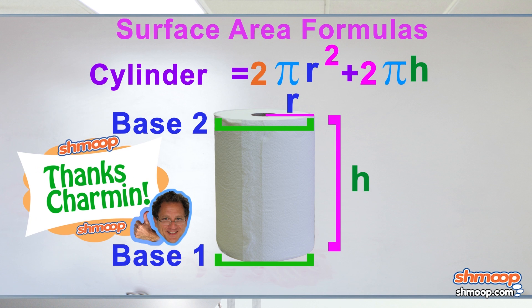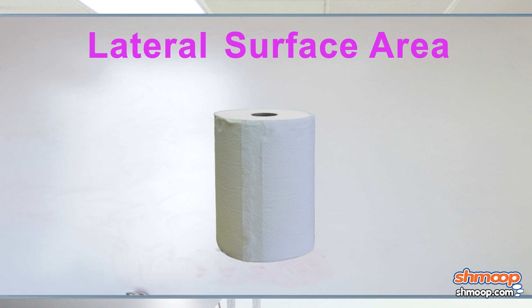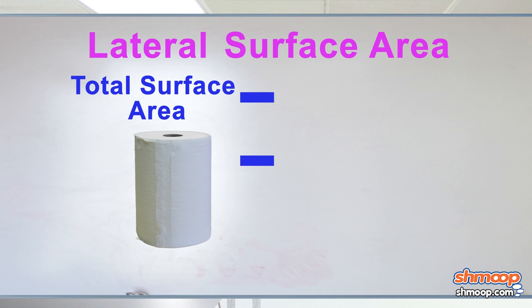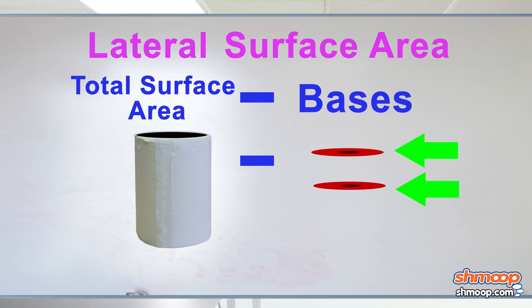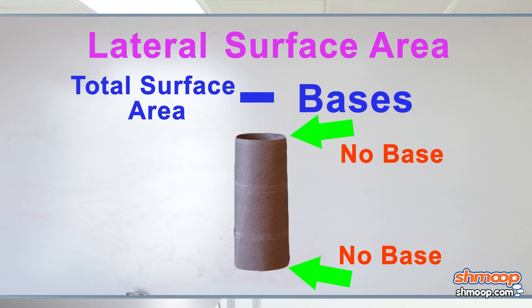We thank Charmin Ultralight for the props here. With lateral area, they're basically just looking for the total surface area minus the bases. Which is where our toilet paper roll works perfectly, since it has two holes where its bases should be. And really, there's no end to the fun we can have using formulas on our toilet paper. Seriously. We could spend all day in there.